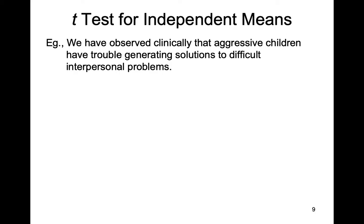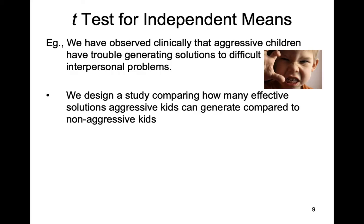Let's do an applied example to make this more concrete. We've observed clinically that aggressive children have trouble generating solutions to difficult interpersonal problems. So we're going to design a study comparing how many effective solutions aggressive kids can generate compared to non-aggressive kids — two groups, two different samples. Ultimately we're interested in making conclusions at the level of populations: a population of aggressive children and a population of non-aggressive children.